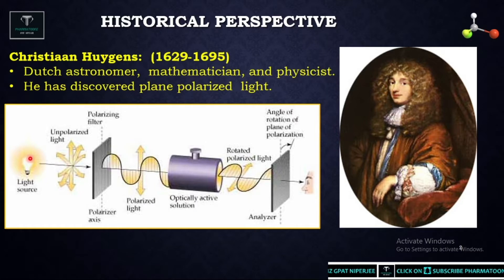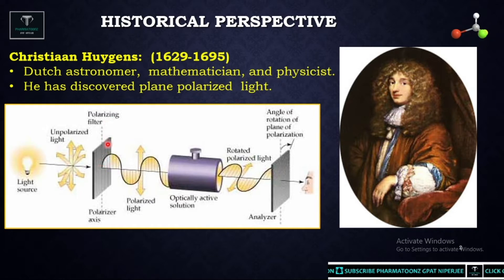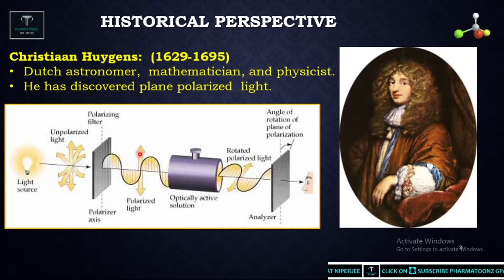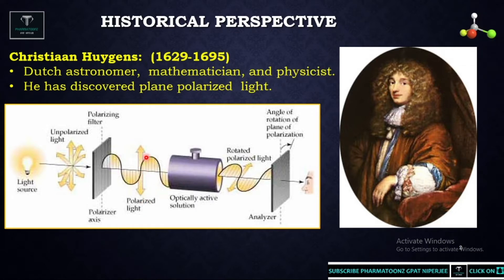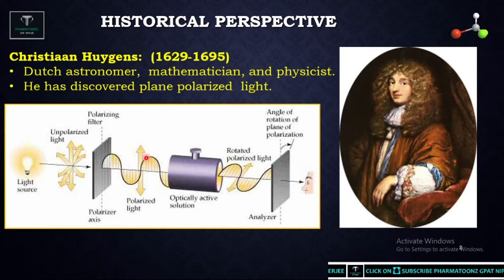For example, from a light source, light rays vibrate in all possible planes. Through a polarizer, this unpolarized or polychromatic light is converted into monochromatic light where light rays vibrate in only one possible plane. This is how polychromatic light is converted to plane polarized light, as discovered by Christian Huygens.